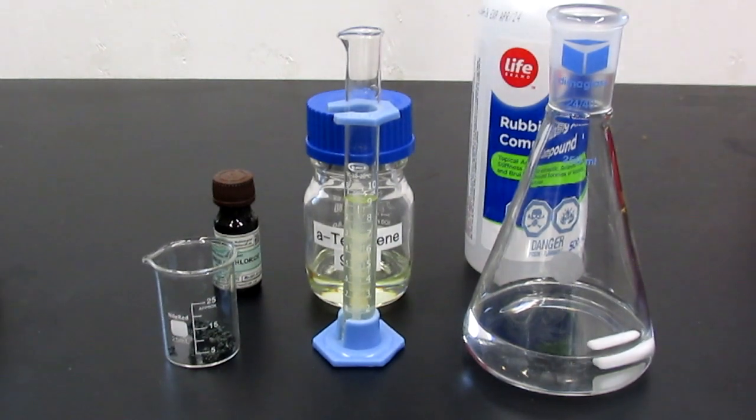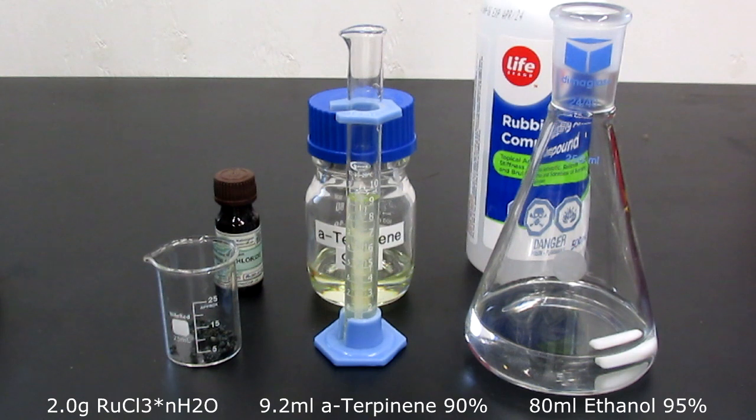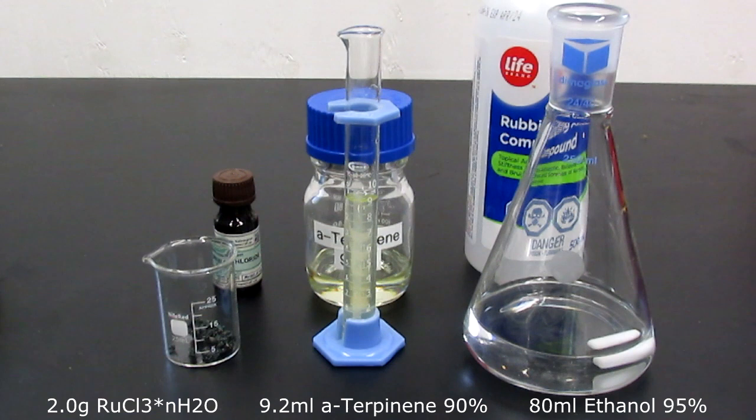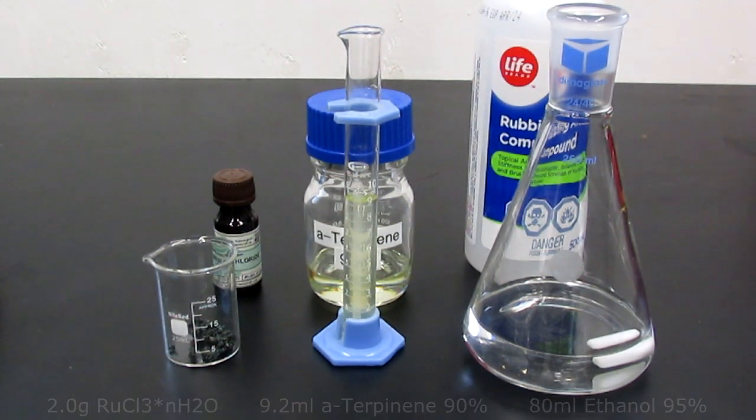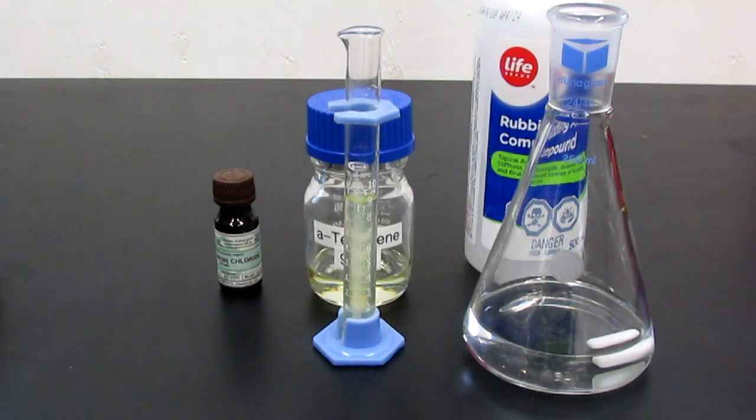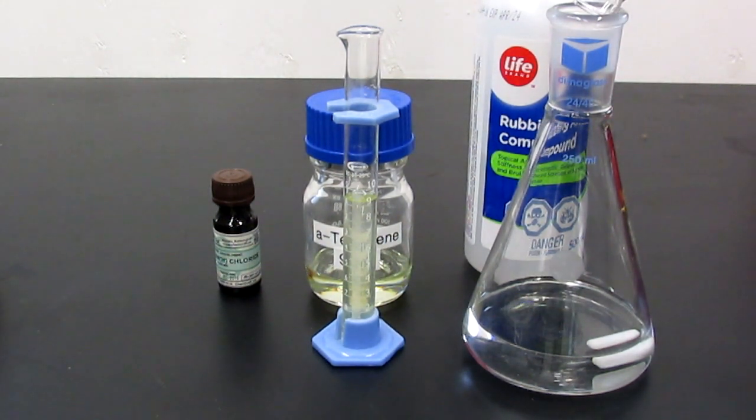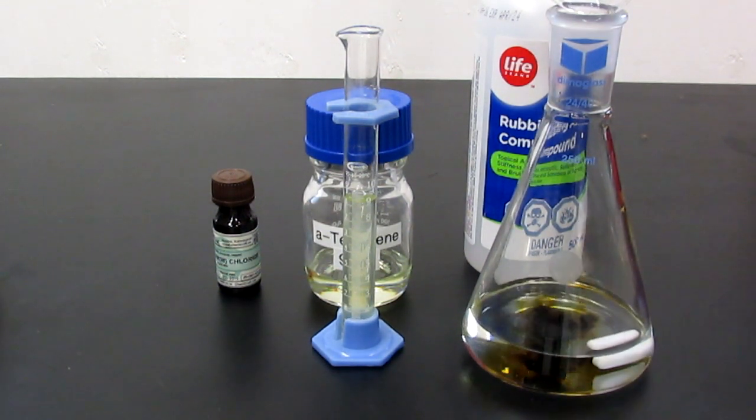For the synthesis, we're going to be using 2 grams of ruthenium trichloride, 9.2 milliliters of the alpha-terpinene, and then 80 mils of ethanol, 95%. So, what I'm going to do is dissolve the ruthenium trichloride in the ethanol.